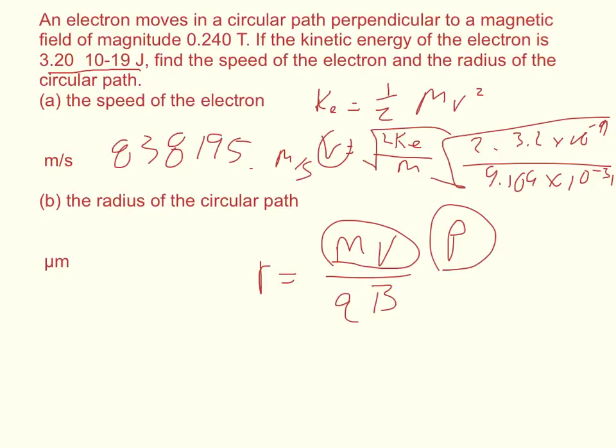Now the radius, we're going to take the mass of the electron. So the mass is 9.109 times 10 to the negative 31. We're going to take it times the velocity, so times 8.38 times 10 to the fifth.